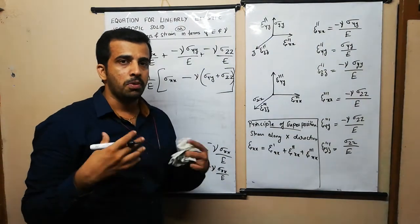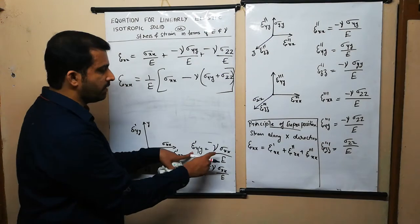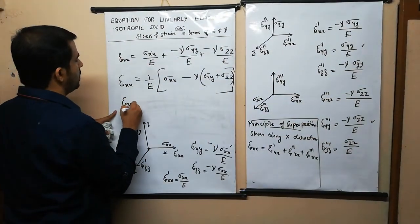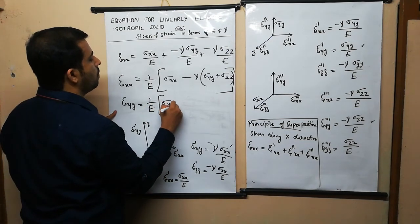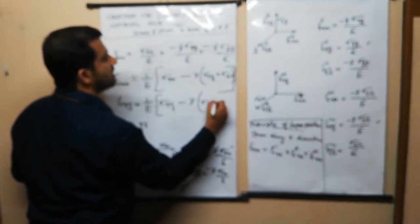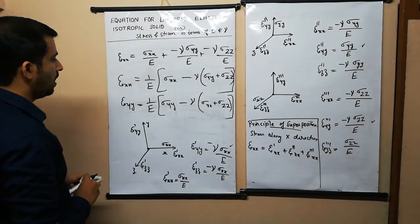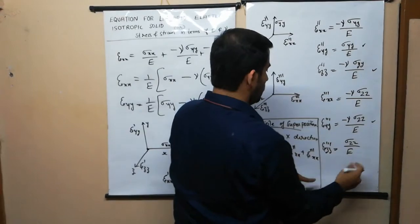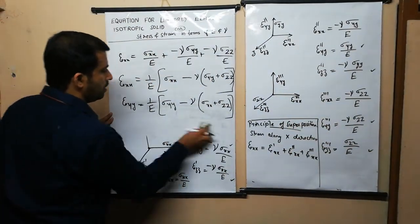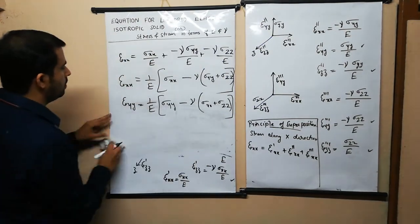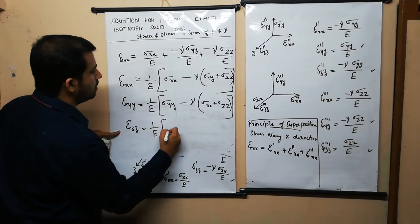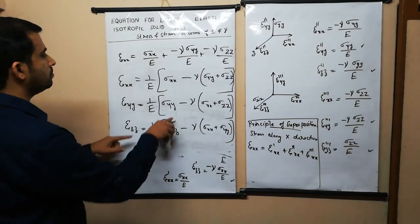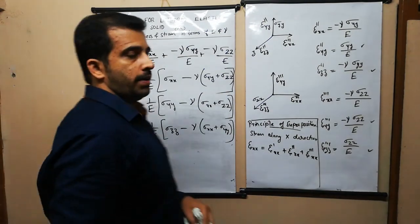Similarly, applying the principle of superposition along the y direction, adding the relevant terms gives epsilon_yy equal to (1/E) into (sigma_yy minus nu into (sigma_xx plus sigma_zz)). This is the second equation. Considering strain along the z direction and adding the appropriate terms, we finally obtain epsilon_zz equal to (1/E) into (sigma_zz minus nu into (sigma_xx plus sigma_yy)). These are the basic equations of elasticity for linearly elastic isotropic solids in the 3D case.